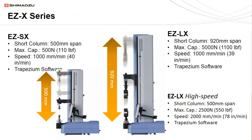The EZ-X series is available in three varieties: the EZ-SX, EZ-LX, and EZ-LX high-speed. The EZ-SX and EZ-LX are virtually identical except for span and capacity. The EZ-SX has a maximum span of 500 millimeters and a maximum capacity of 500 newtons. The EZ-LX has a longer maximum span of 920 millimeters and a maximum capacity of 5000 newtons. The EZ-LX high-speed has the same 920 millimeter span but a reduced capacity of 2500 newtons and twice the crosshead speed of the EZ-SX and EZ-LX. All three models are controlled with Shimadzu's Trapezium software.